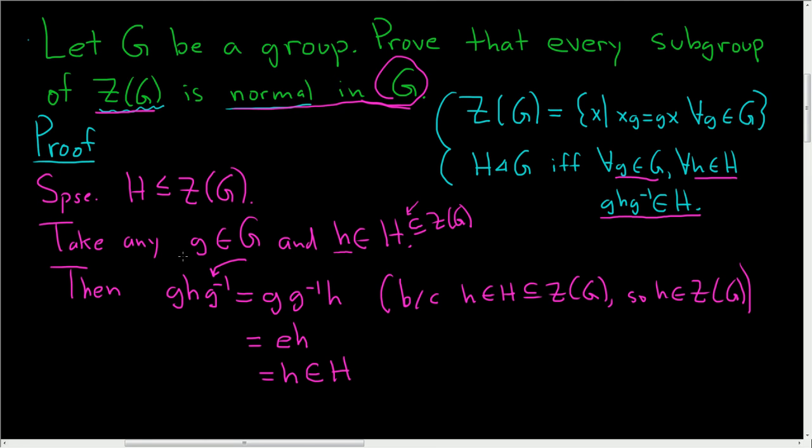So we showed that for any little g in G and little h in H, that ghg inverse is actually also in H. And so this basically shows that H is normal in G. So this shows H is normal in G.